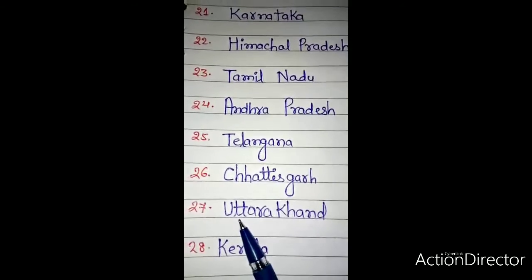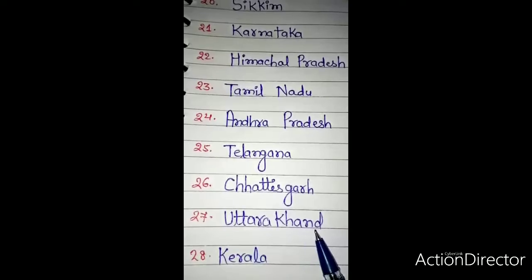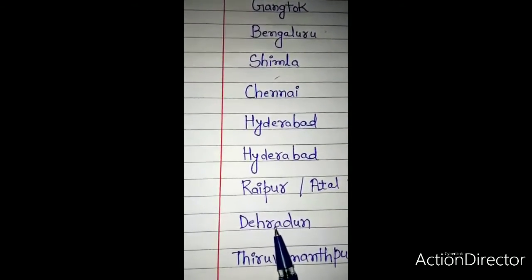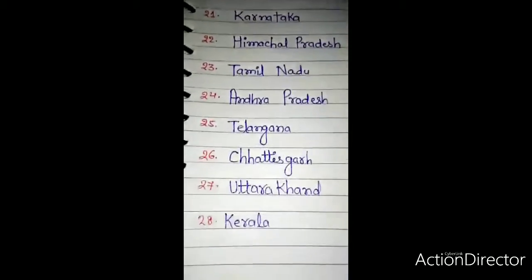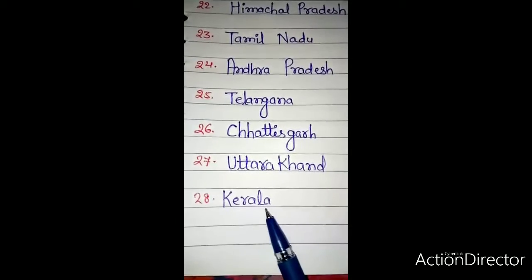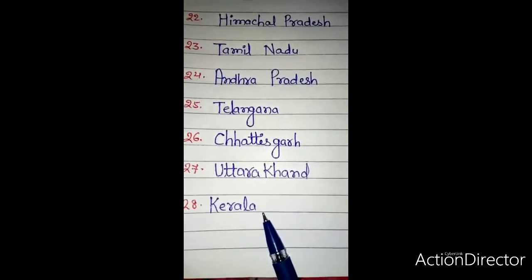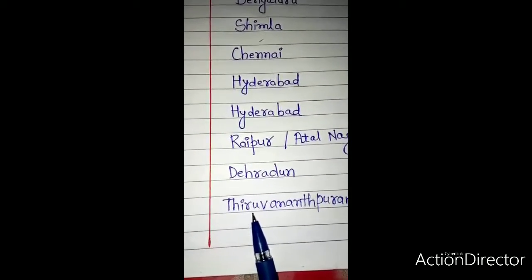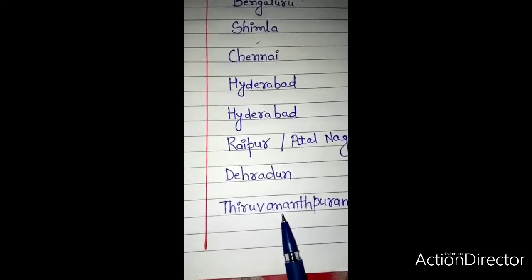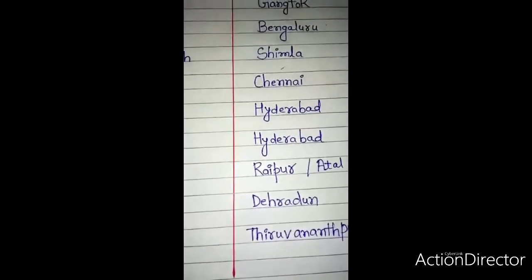Number 27: Uttarakhand — U-T-T-A-R-A-K-H-A-N-D. The capital of Uttarakhand is Dehradun — D-E-H-R-A-D-U-N. Number 28: Kerala — K-E-R-A-L-A. The capital of Kerala is Thiruvananthapuram — T-H-I-R-U-V-A-N-A-N-T-H-P-U-R-A-M.